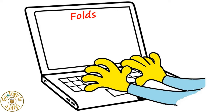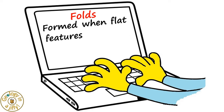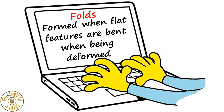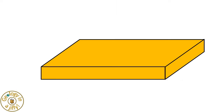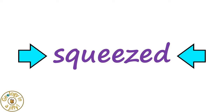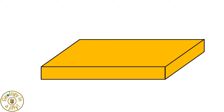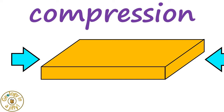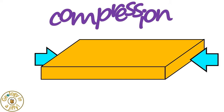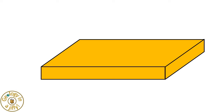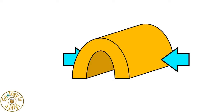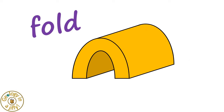Folds are formed when flat features are bent when being deformed. Take this flat slab of rock. When squeezed like this, the flat slab undergoes compression, squeezing it, which causes the flat slab to buckle, forming a fold.